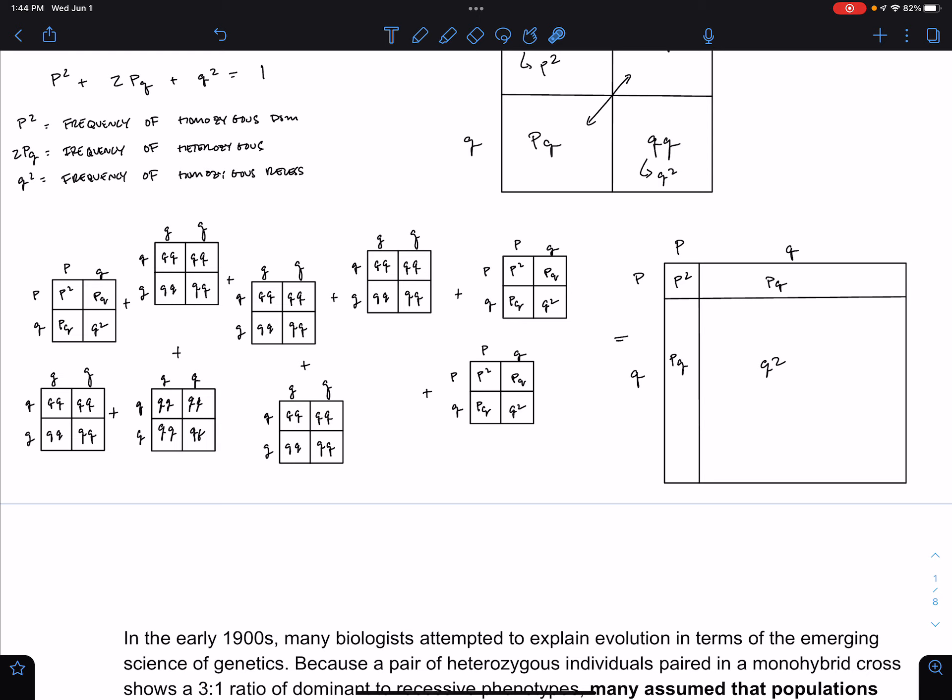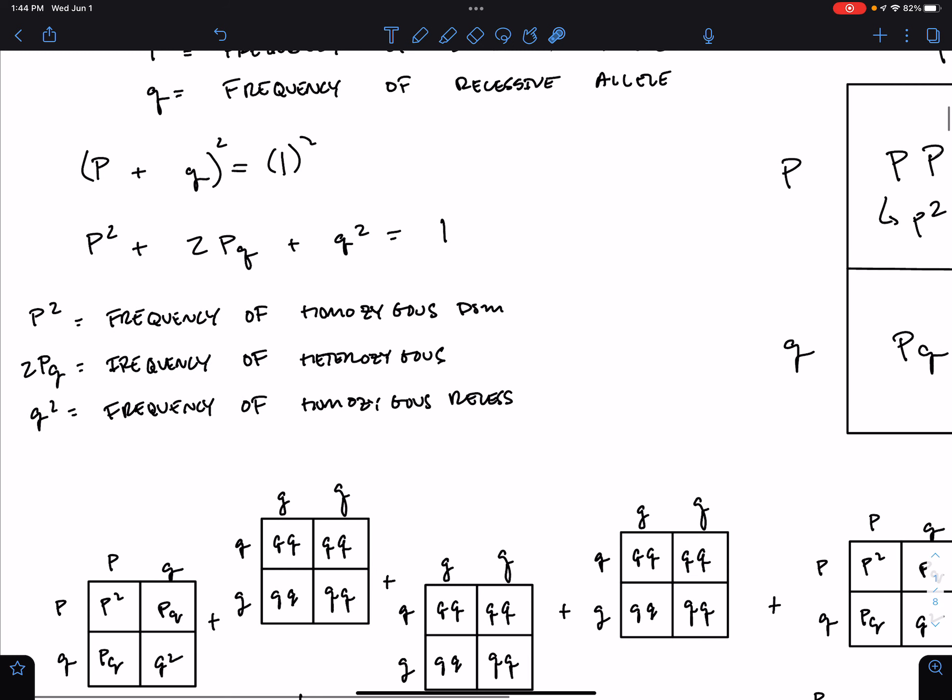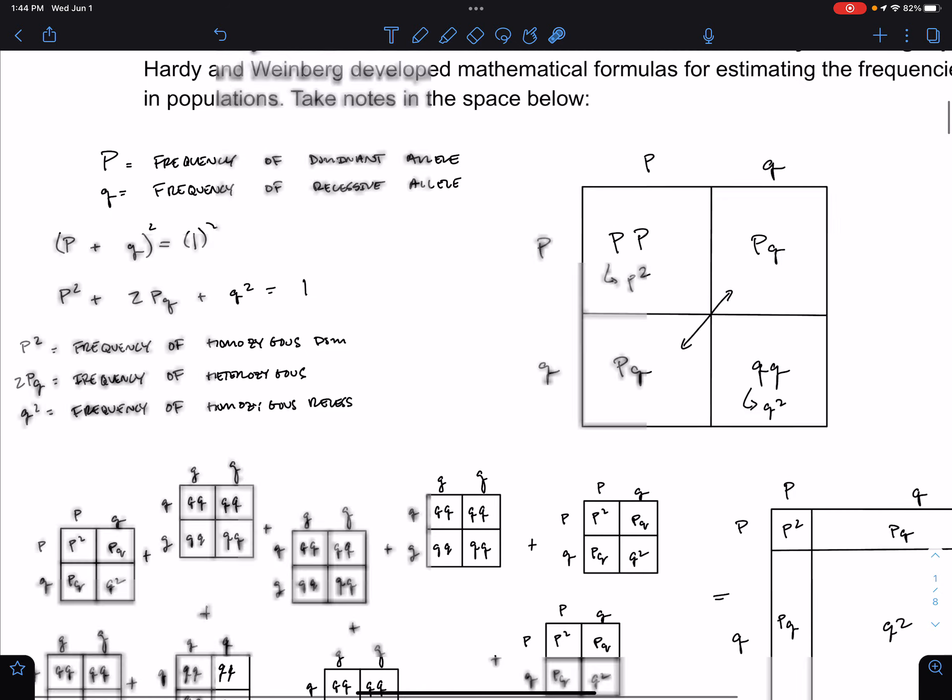So for this reason, the Hardy-Weinberg equations can be useful to us to calculate the frequency of homozygous recessive, homozygous dominant, and heterozygous individuals within the population.